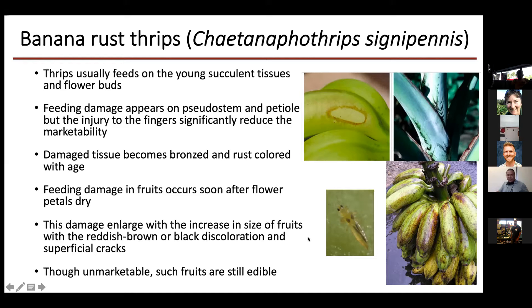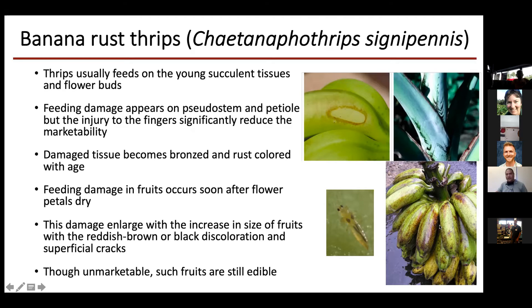Thrips have a rasping and sucking mouthpart. Rasping means they scratch the outer layer of the tissue, which roughens it and gives a bronzing appearance as you can see here. Then they make a puncture and suck the sap from the tissue. They feed on the developing fruit when it is very tiny, and as the fruit enlarges, the bronzing appearance also increases in size. This damage looks bad though — such fruits are unmarketable but still edible.